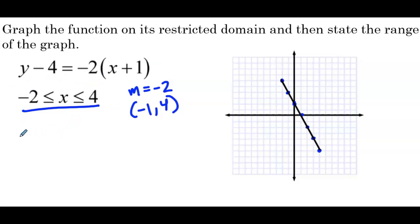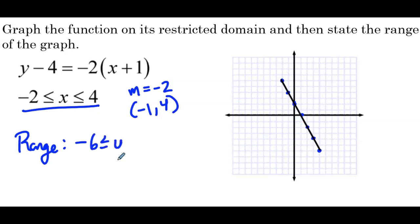For the range, working from the lowest y value up, the lowest y value is negative 6, and we work up to the highest y value, which is positive 6. So the range is negative 6 is less than or equal to y, which is less than or equal to 6.